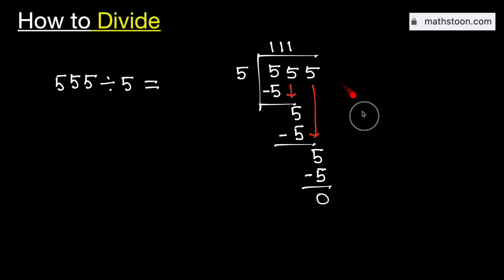As we have no number to bring down here and we have got the number 0, so we will stop. Therefore, 555 divided by 5 is equal to 111, and this is our final answer.